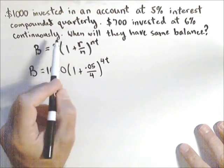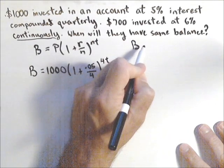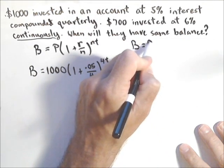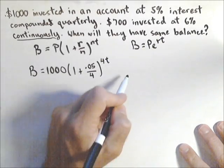The second will be similar, but notice it's actually being compounded continuously. Continuously, we have a little bit different formula sometimes called the PERT formula. It's B equals P E to the RT. Looks like it spells PERT.